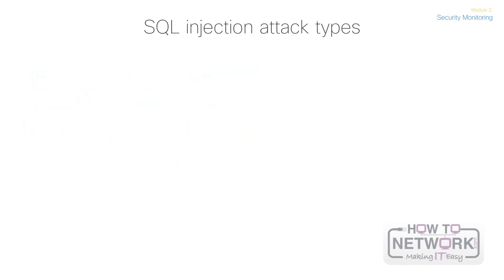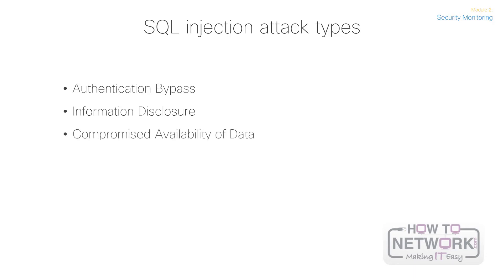Now let's look at various SQL injection attacks. First is authentication bypass, which allows an attacker to log onto an application without supplying a valid username and password. Next is information disclosure, used to obtain sensitive information from a database. Third is compromised data integrity, which involves altering the contents of a database to either deface a web page or insert malicious content. Compromised availability of data allows an attacker to delete information to cause harm or delete log and audit information. Finally, remote command execution allows an attacker to compromise the host operating system.